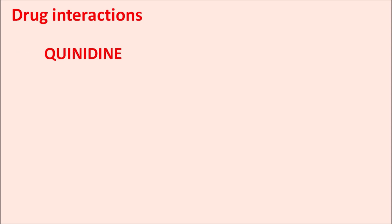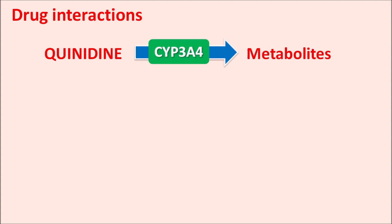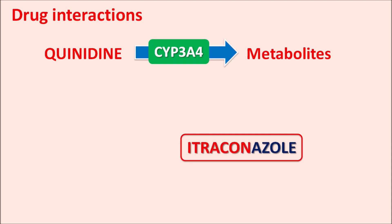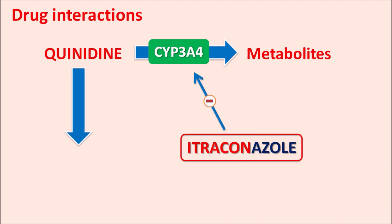One important drug interaction exists between quinidine and itraconazole. Quinidine is metabolized by the cytochrome P450 system via CYP3A4, which is inhibited by itraconazole. So in the presence of itraconazole, the metabolism of quinidine is inhibited, resulting in increased activity of quinidine. Since quinidine can produce hearing loss, in the presence of itraconazole the hearing loss is more pronounced.